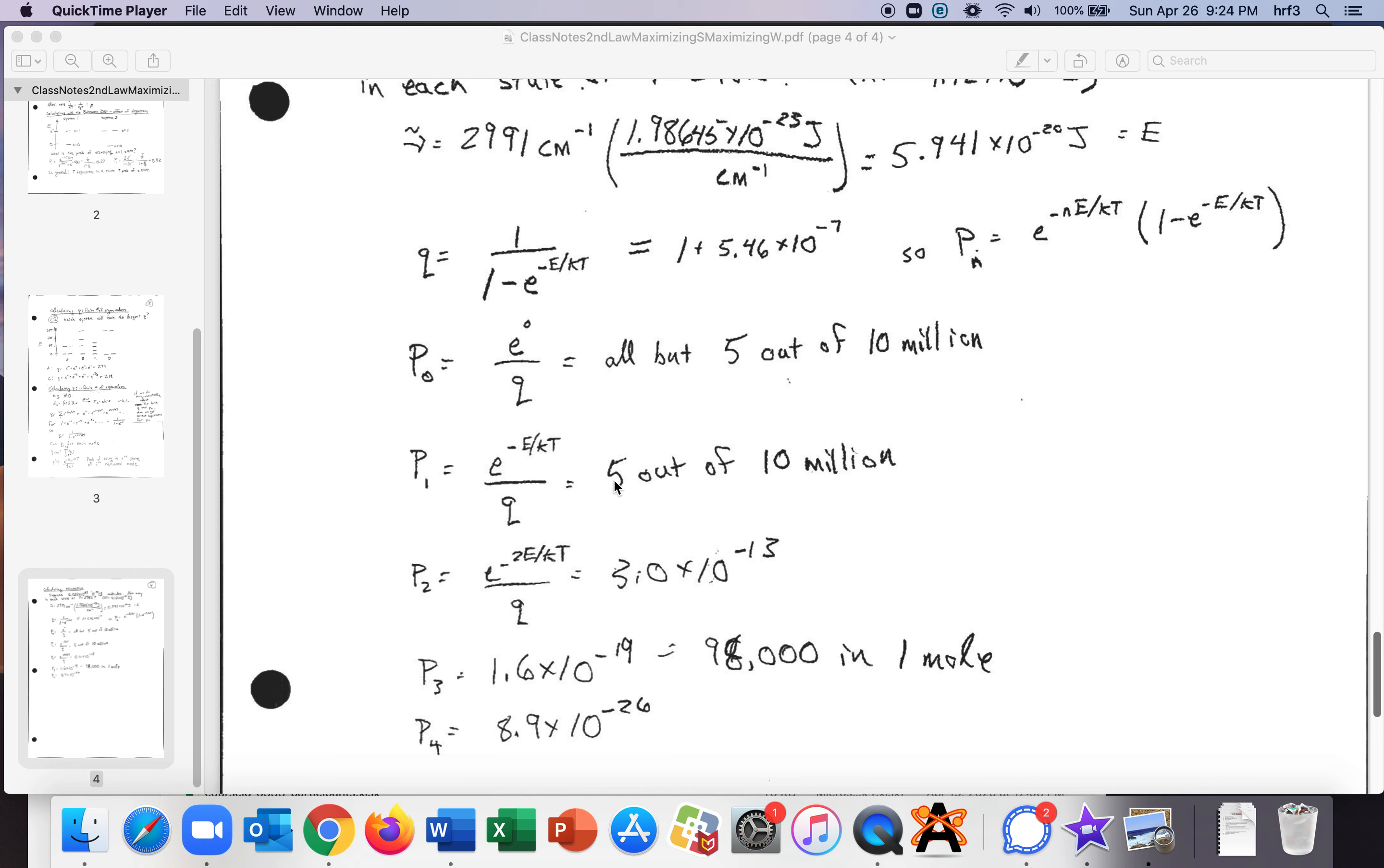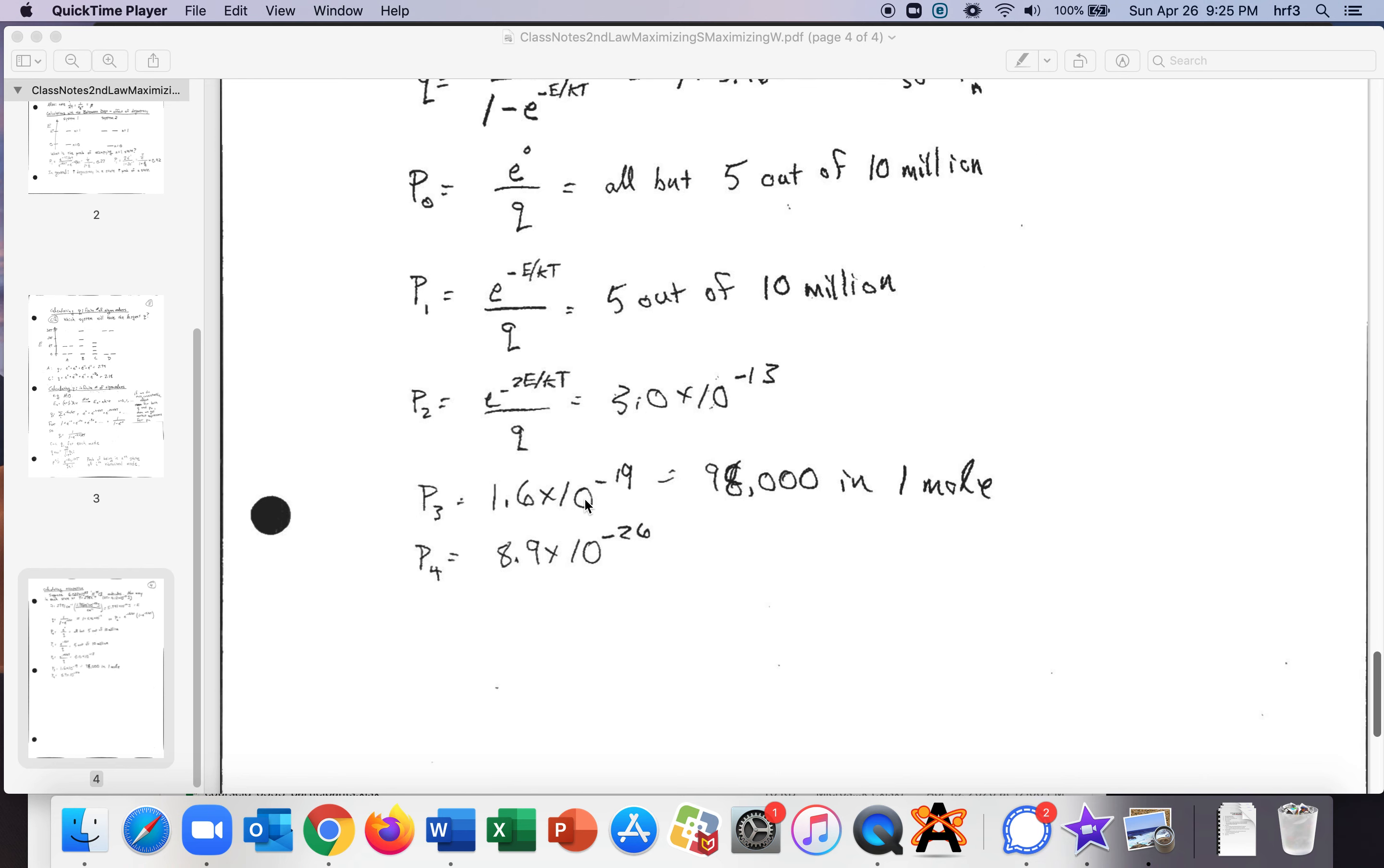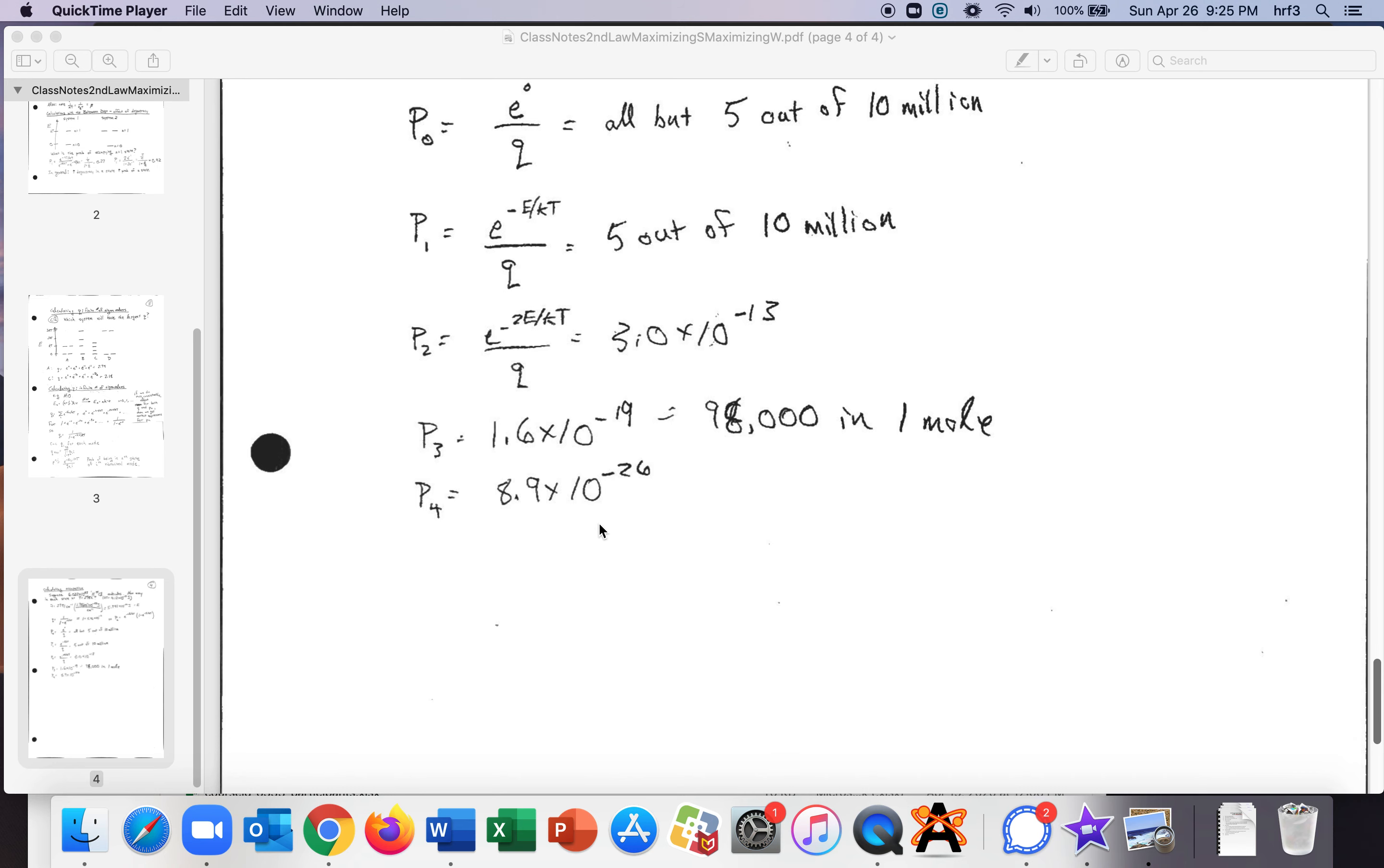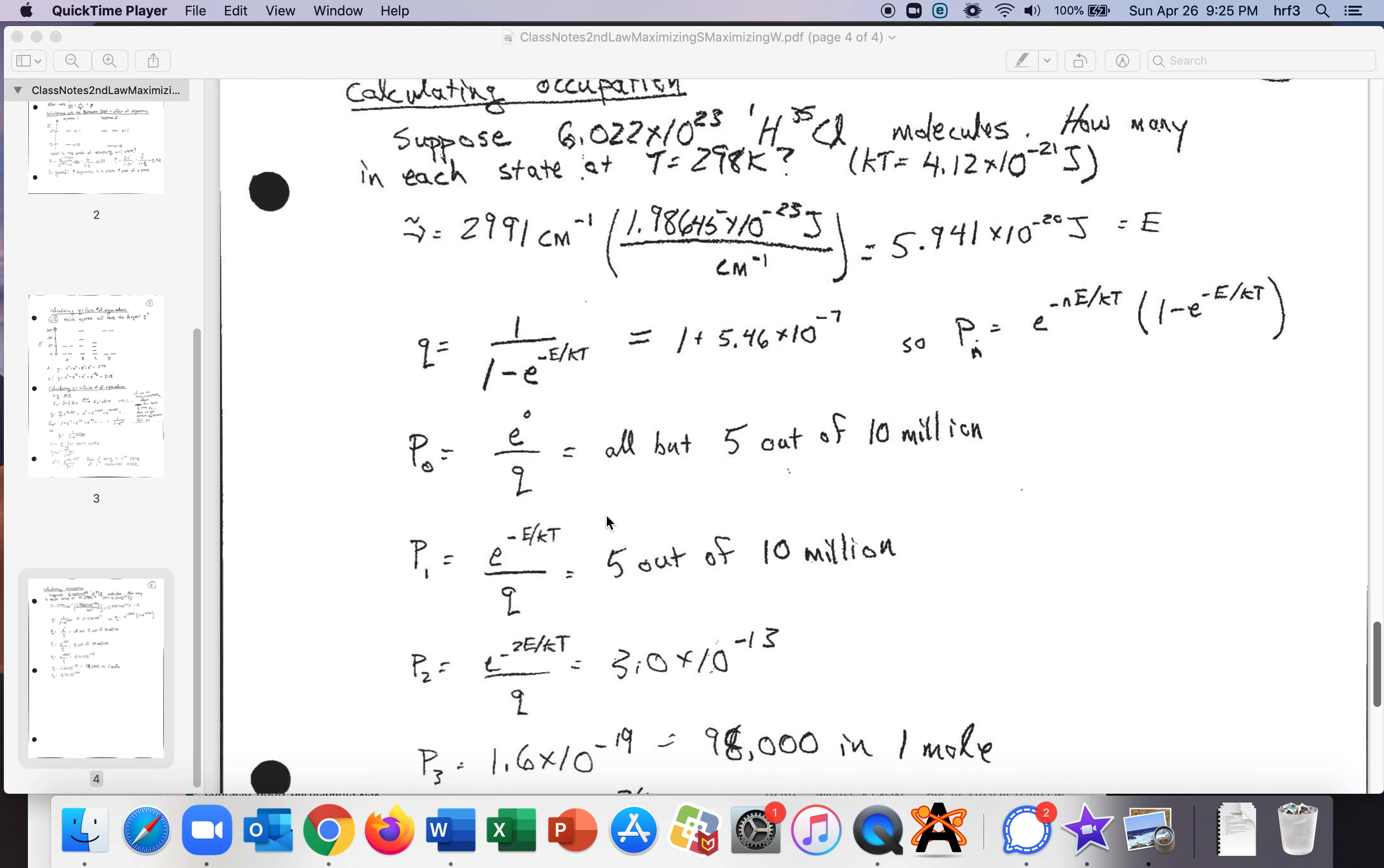First excited state is 5 out of 10 million so there you've got basically all of them you would think but if you go e to the negative 2 e over kt then you got 3 times 10 to the minus 13. P3 you've got 1.6 times 10 to the minus 19 which is still 98,000 molecules out of a mole and then p4 you're finally down below no you're just above one molecule per mole right no no sorry you're you're below one in a thousand molecules per mole there.